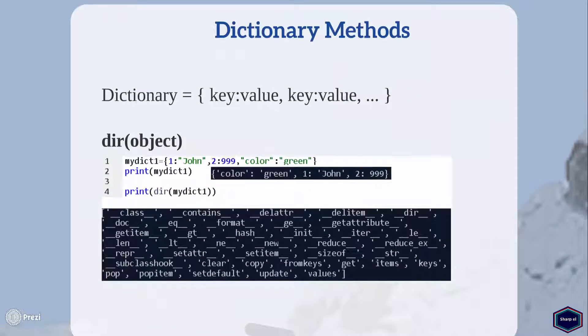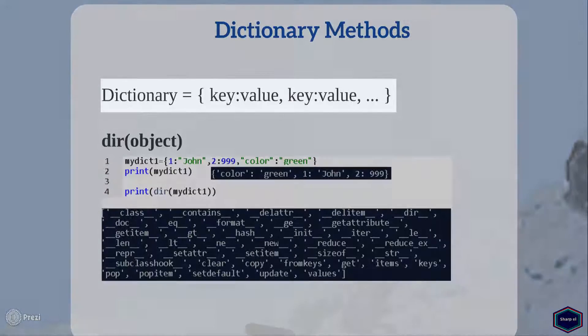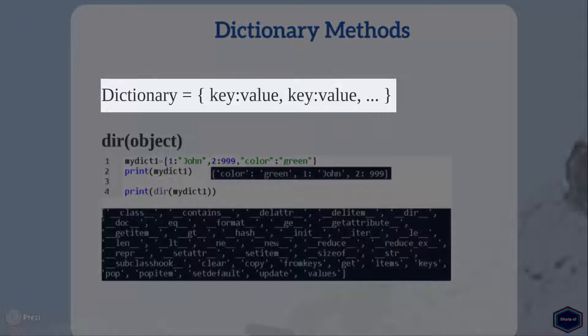Dictionary is one of the built-in data types in Python. And like everything else in Python, dictionaries are also objects. In Python, a dictionary is an unordered set of key-value pairs, separated by a comma and enclosed within curly braces.